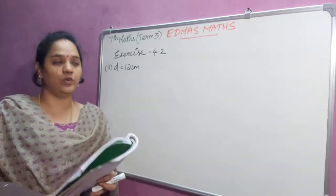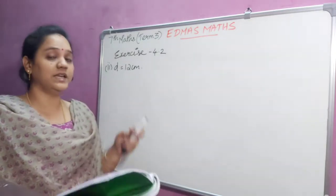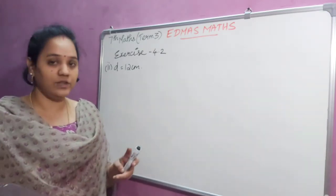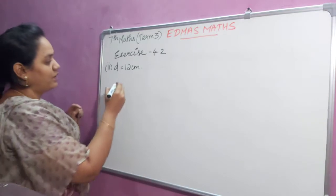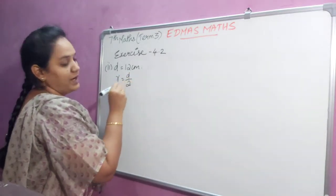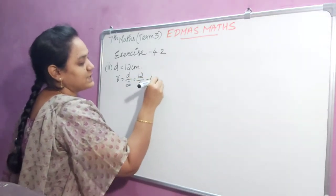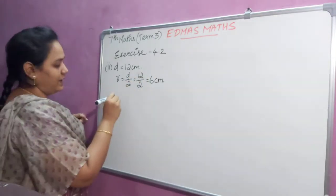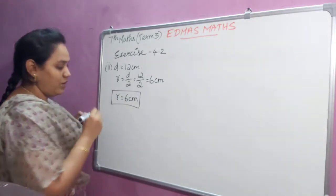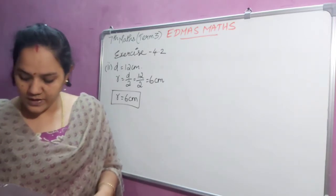I am going to do the second option: d equal to 12 centimeter. So d equal to 12 centimeter means we have to find out the radius for constructing a circle. Radius is nothing but diameter divided by 2. Diameter is 12, so 12 divided by 2 is 6 centimeter. So here the radius is 6 centimeter.